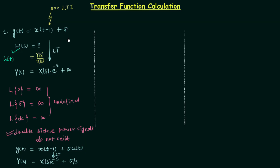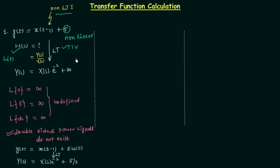The system is non-LTI because we have 5 here — an added constant term. Whenever there is any added term, the system is non-linear. It is time invariant because the coefficients are constant and there is no time scaling, and the added term is also constant. So it is time invariant but non-linear, therefore it is non-LTI. Transfer function and impulse response do not exist for such systems — we cannot calculate them.